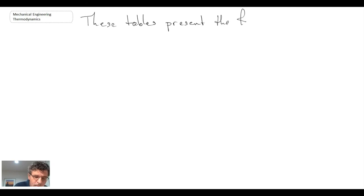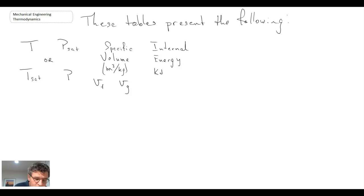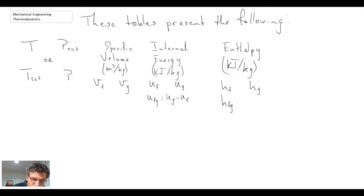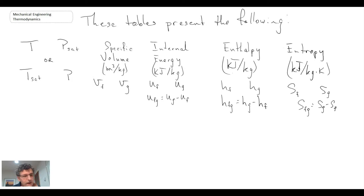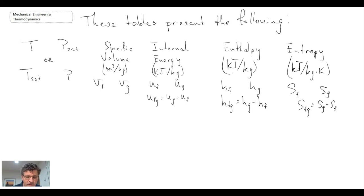These two tables — the pressure table and the temperature table — present data in the two-phase region. You'll have specific volume, internal energy, enthalpy, and entropy. The nomenclature uses subscripts F or G: F pertains to the saturated liquid and G pertains to the saturated vapor point, which are the two extremes in the two-phase region.